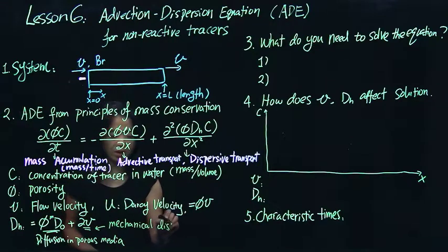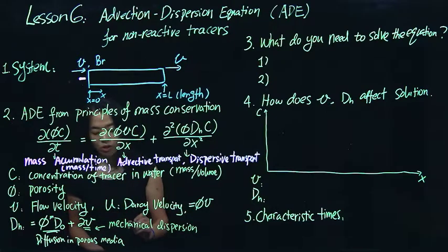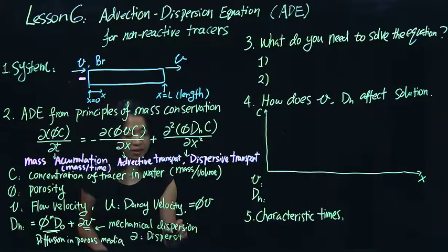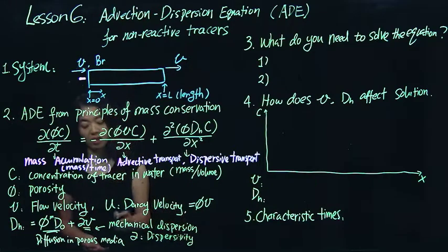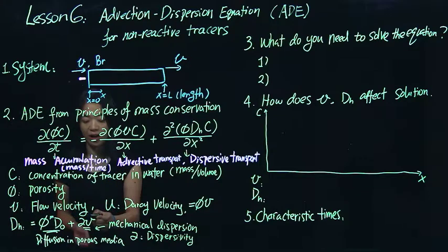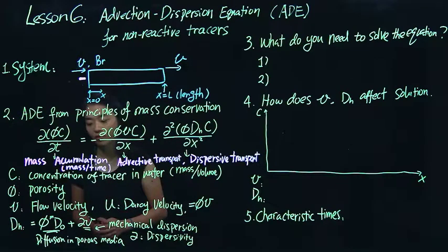And then the second term is essentially taking into account the mechanical dispersion. And you can think about alpha is what we call dispersivity, which is a parameter describing how fast mechanical dispersion happens. And it's related to velocity. So the whole term is also related to velocity. So the faster flow, you actually have larger term of this.